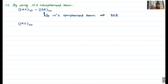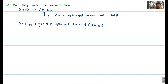Now let's perform the same computation using the 10's complement form. The 10's complement of 132 is 868, as we calculated earlier. So we compute 197 base 10 plus 868 base 10.